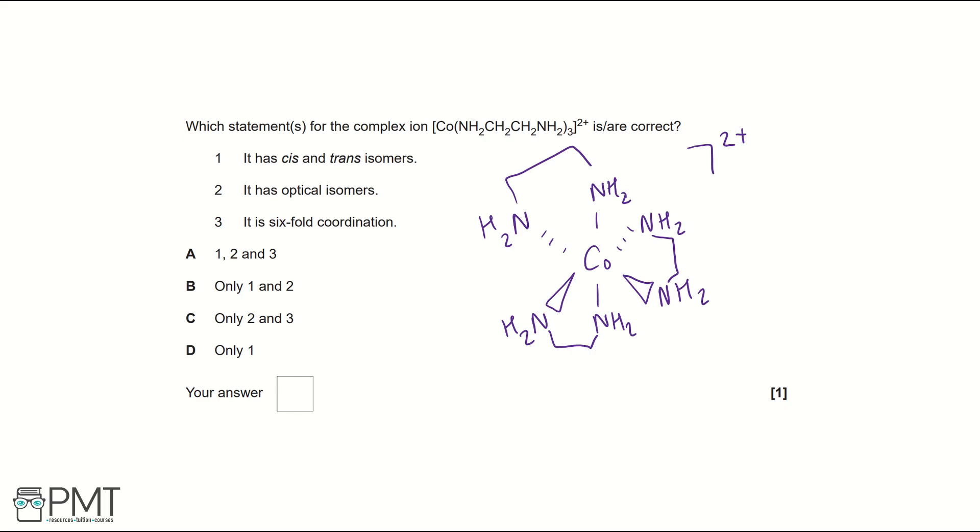So looking at the different options we're given: it has cis-trans isomers. Well, this statement is incorrect because in order to have cis-trans isomers you need to have different priority groups, and because we've got the same bidentate ligand attached, we don't have different groups, so it can't have cis-trans isomers.